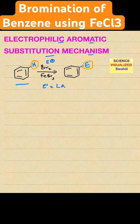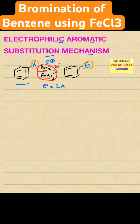In this particular reaction, we're using Br2 and FeBr3, which is a metal catalyst. Basically what happens is you end up generating a Br+ electrophile. So Br2 plus FeBr3 gives you Br+, which then substitutes the hydrogen. In this case, the electrophile is Bromine.